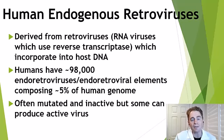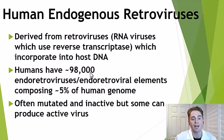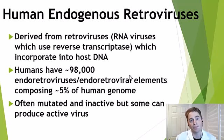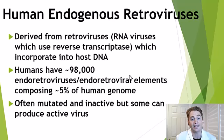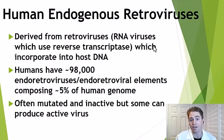It turns out this is extremely common. Humans have around 98,000 endogenous retroviruses in our genome, and some of them are endoretroviral elements — elements because they can become mutated over time, and a lot of them don't function and don't produce active virus. They're super common. Around 5% of our genome is actually these retroviral elements, and some of them actually produce live virus and may play a role in various human diseases, including MS.